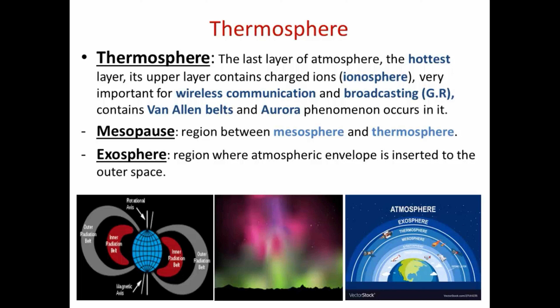The thermosphere is also surrounded by two magnetic belts known as the Van Allen belts. The Van Allen belts are two magnetic belts surrounding the ionosphere layer and play an important role in scattering harmful charged cosmic radiations coming from outer space. An important phenomenon that occurs in this layer is the aurora phenomenon.